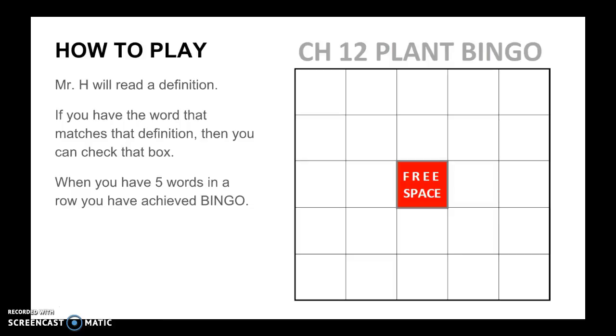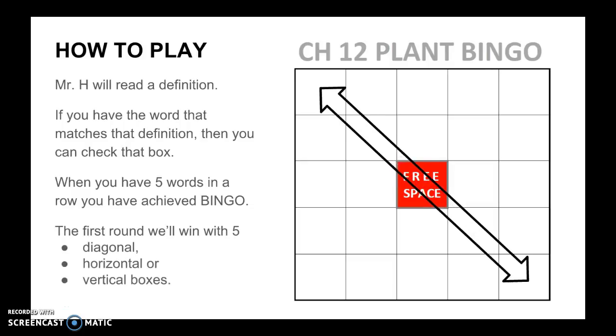When you have five words, you have achieved bingo. The first round will win with five simply diagonally, horizontally, or vertically—for those of you who don't know: diagonal, horizontal, or vertical. All the other fancy ways to win we'll try in the second round.